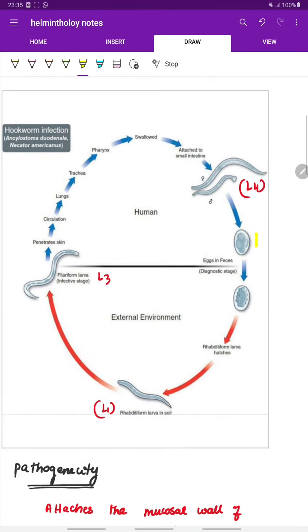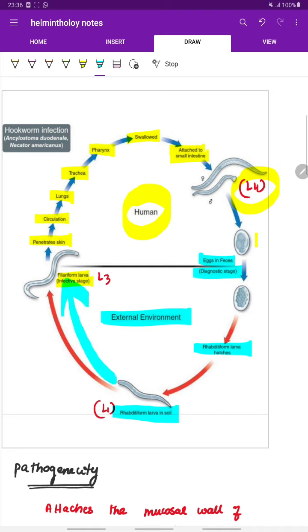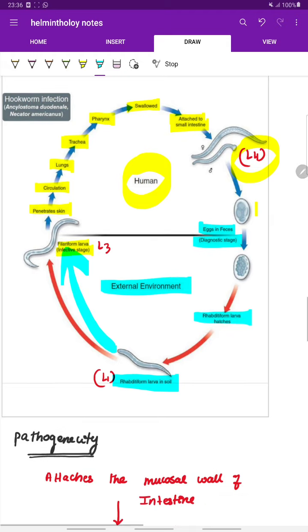Another summary of life cycle: in humans, the filetiform larva penetrates the skin, enters the circulation, reaches the lungs, trachea, pharynx, from the pharynx it is re-swallowed, gets into the GI tract, attaches to the small intestine, and matures into the L4 larva, finally the adult form. The adult lays eggs, these eggs are passed in the feces which is the diagnostic stage. The feces enters the external environment, converts into the rhabditiform larva by hatching, then grows into filetiform larva which becomes again the infective stage.